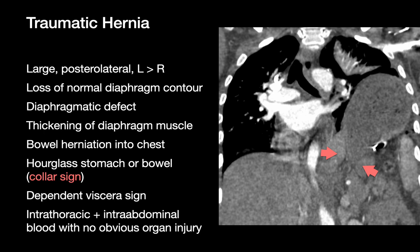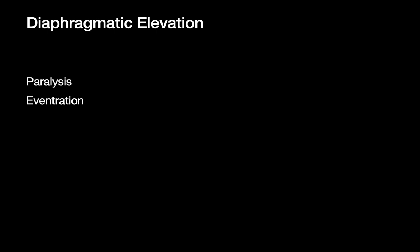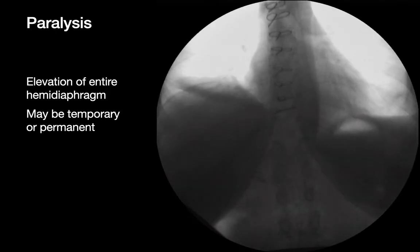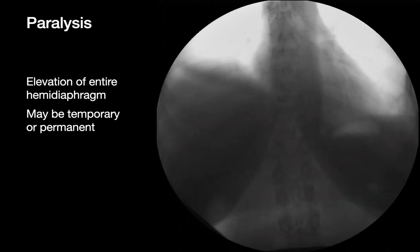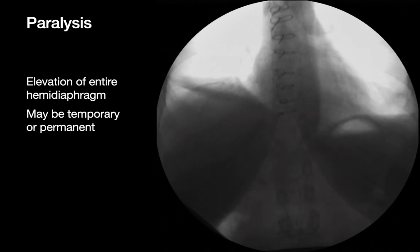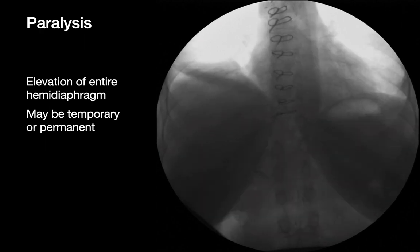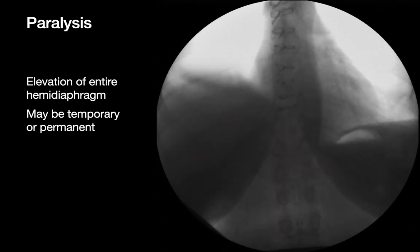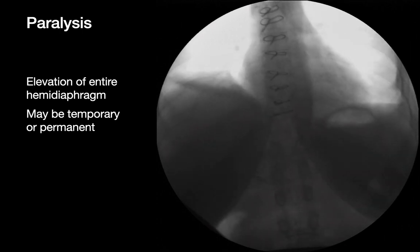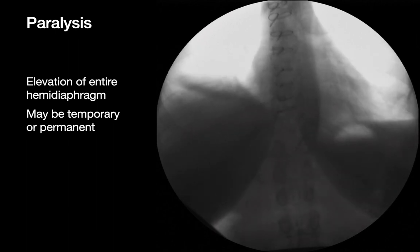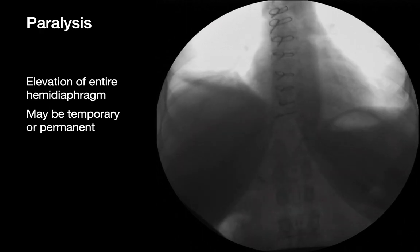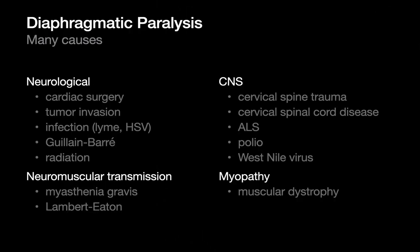Disorders of diaphragm elevation are usually due to paralysis or eventration. Paralysis will usually involve an entire hemidiaphragm on one side and can be either temporary or permanent. The typical diagnostic imaging finding is paradoxical motion of the paralyzed hemidiaphragm during forced inspiration or a sniff maneuver. On this fluoroscopy study, the paralyzed right hemidiaphragm is not only elevated but moves upwards while the normal left hemidiaphragm snaps downwards as the patient makes repeated sniffs. The most common cause of hemidiaphragm paralysis is generally phrenic nerve injury during surgery.